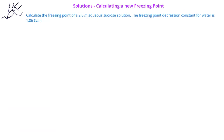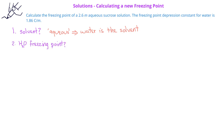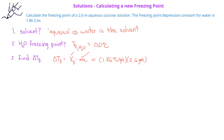In this problem, we're asked to calculate the freezing point of a 2.6 molal aqueous sucrose solution. Since we know this is an aqueous solution, water is the solvent. We can look up in the table of freezing point depression constants and find that K sub f for water is 1.86 degrees Celsius per molal. The freezing point of pure water is 0.0 degrees Celsius. Using the equation delta T sub f equals K sub f times m, with K sub f of 1.86 and molality of 2.6, this gives us a change in the freezing point of 4.84 degrees Celsius.